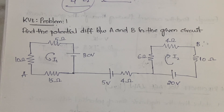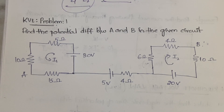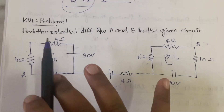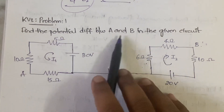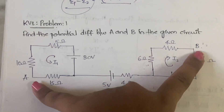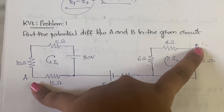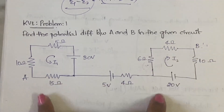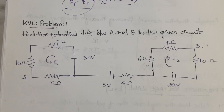This problem is going to be a simple problem. If you see the diagram it doesn't look simple, but don't worry, I'll explain it. The question is: you need to find out the potential difference between A and B in the given circuit — A is here and B is here, and you need to find the potential difference between these two points.